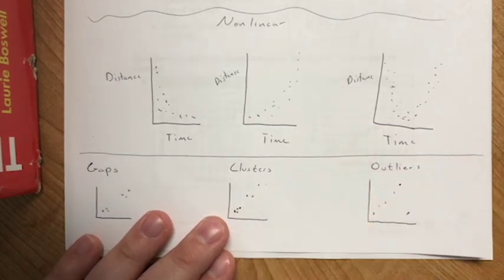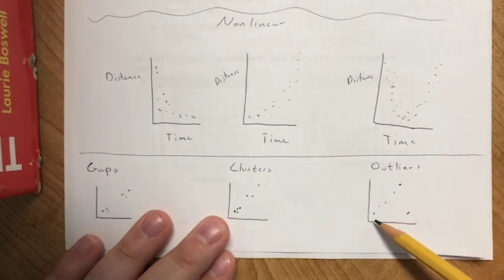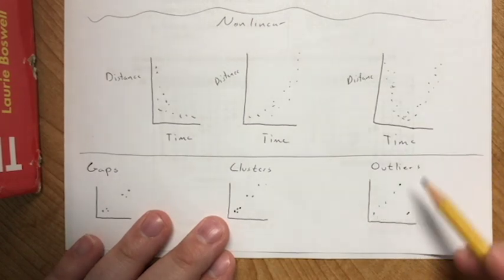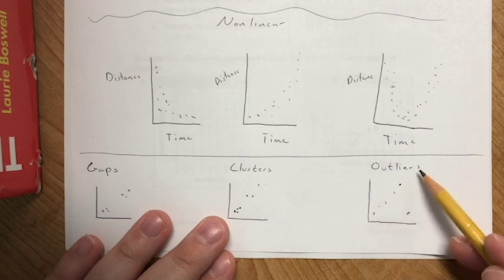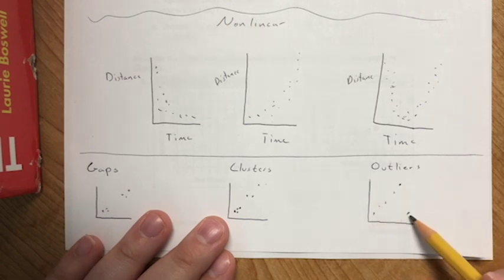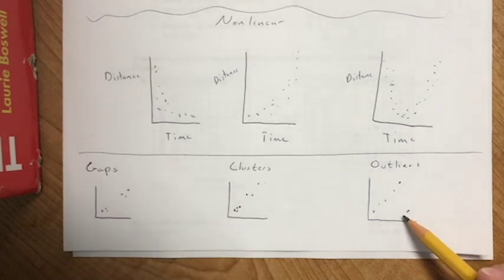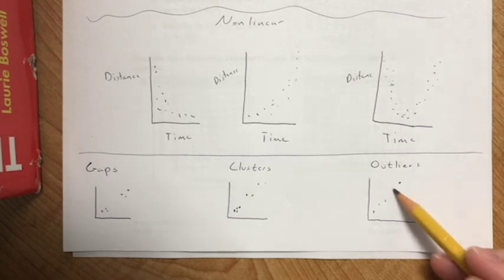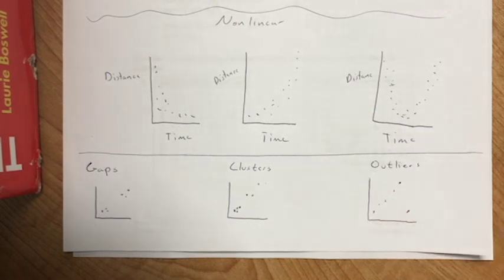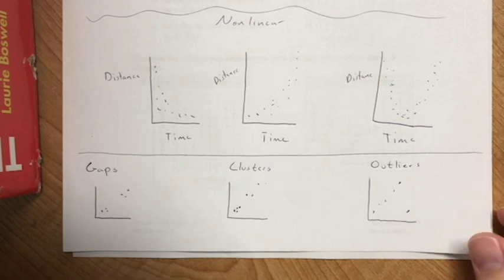Outliers occur when you have a clear relationship — positive or negative — but one data point just doesn't follow the rest. That point sticks out like a sore thumb and doesn't seem to belong with the group. That's why we call them outliers. Those are the basic terms for reading a scatter plot.